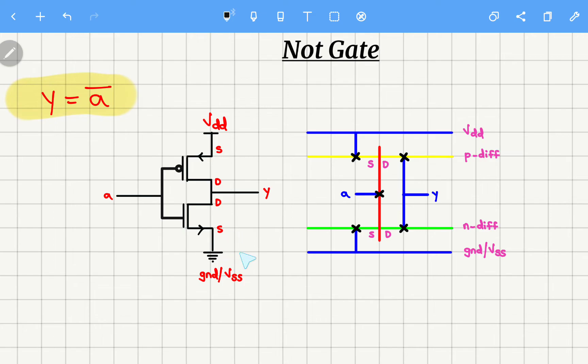Next, the source of NMOS is connected to ground. So this is the source of NMOS which is connected to ground. For connecting, make use of metals which is blue in color.